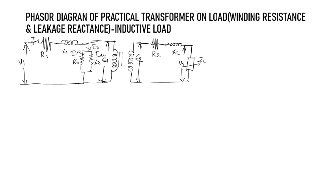We are considering the inductive load. First of all, we draw the main flux on this axis. We know that the no-load current i0 has two components: iw and i-mu. i-mu is the component which produces the magnetizing flux, so i-mu will always be in phase with the flux. iw will be exactly 90 degrees out of phase with i-mu.